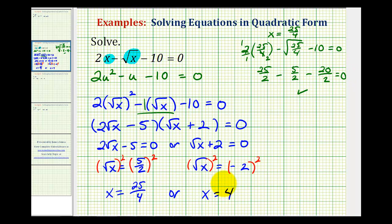Now I'll check x = 4. When x is 4, we would have 2(4) - √4 - 10 = 0. This would be 8 - 2 - 10, but this does not equal zero. So x = 4 is not a solution to this equation.